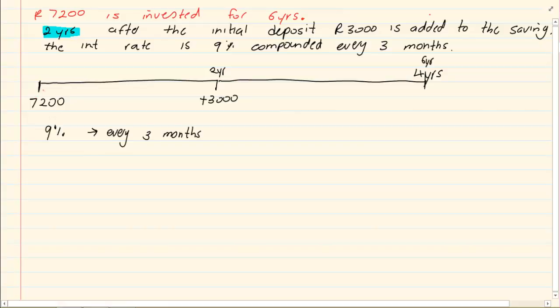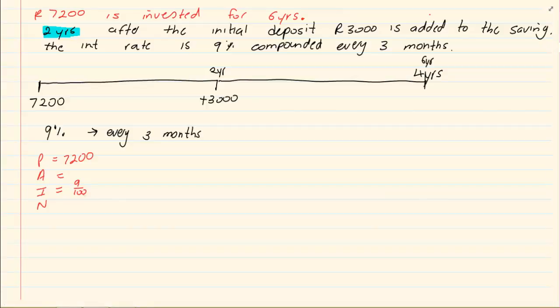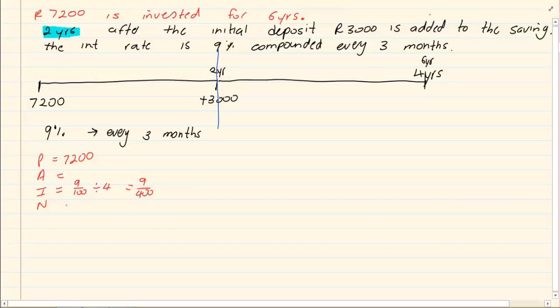We are going to start with the initial payment starting from 7200. Now our interest is 9 over 100. But if they say every 3 months it means in March, in June, in September and December they are doing a calculation. So how many times in the year are they doing a calculation? They are doing it 4 times, which will give us 9 over 400. Now look at our N. We are going to stop when there is a change. So after 2 years there is a change. So the N that we are going to work with is only 2 years. But since it is every 3 months we are going to times it by 4 which will give us 8.